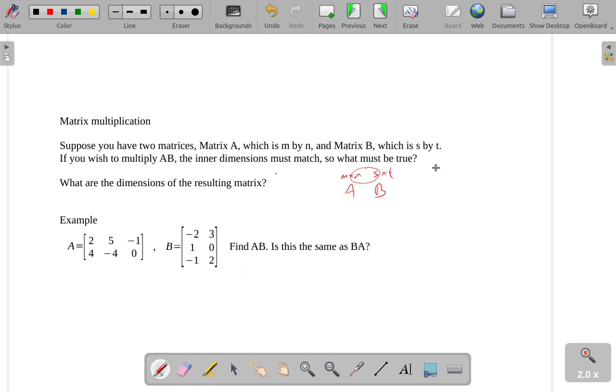Let me do it over here. N must equal S in order for us to be able to multiply these matrices. And then the result is going to be the remaining dimensions, the M and the T. The result is M by T.